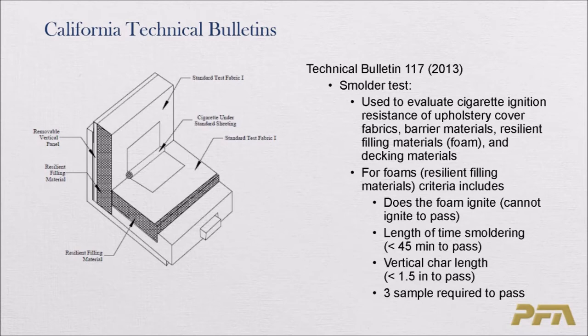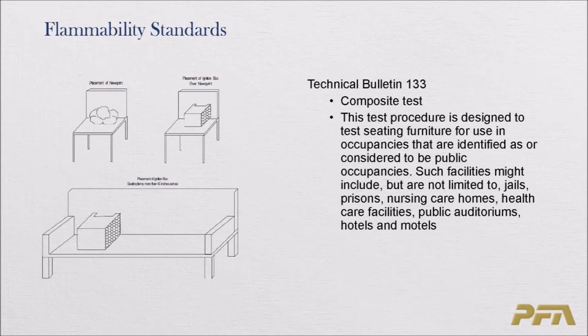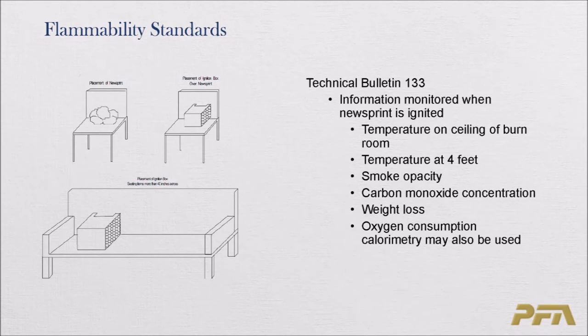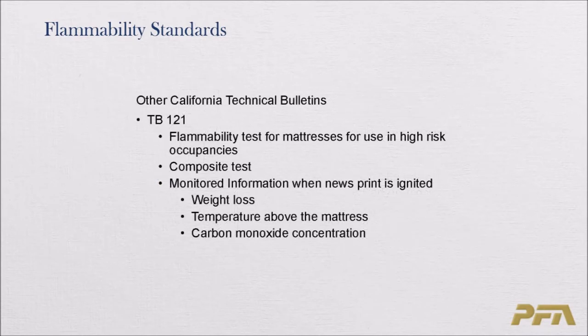Technical Bulletin 133 is a composite test for furniture in public occupancies such as jails, prisons, nursing homes, hotels, and motels. Newsprint is ignited and measurements are taken of ceiling temperature in the burn room, temperature at four feet, smoke opacity, carbon monoxide concentration, and weight loss. Oxygen consumption calorimetry can also be used.